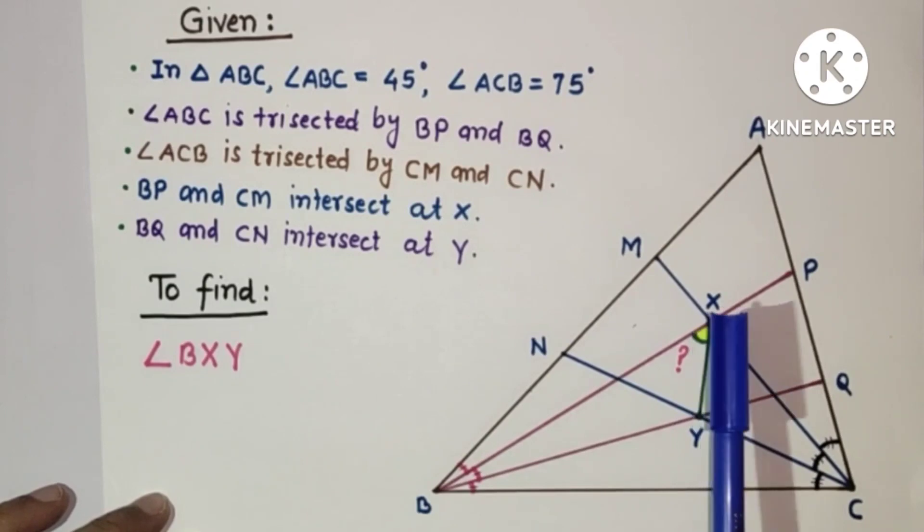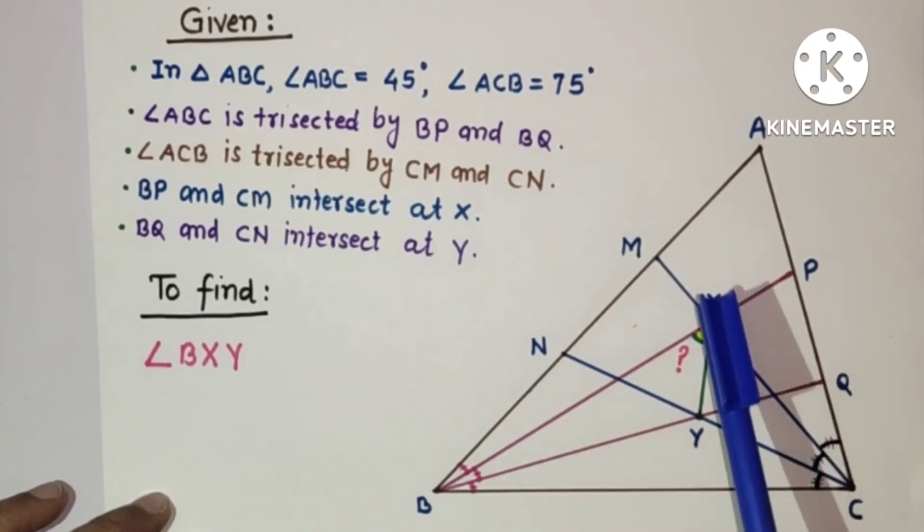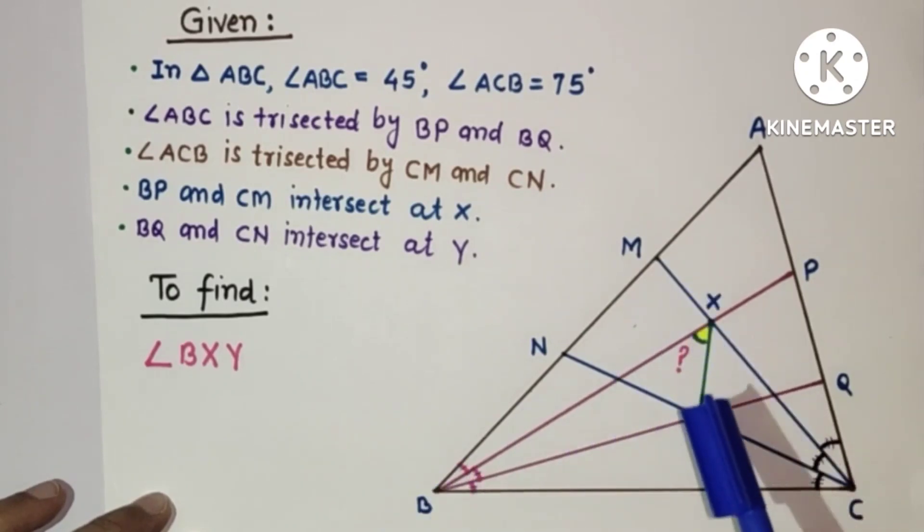X is the point of intersection of BP and CM and point Y is the intersection point of BQ and CN. XY is the line segment joining these two intersection points and we have to find the value of angle BXY.